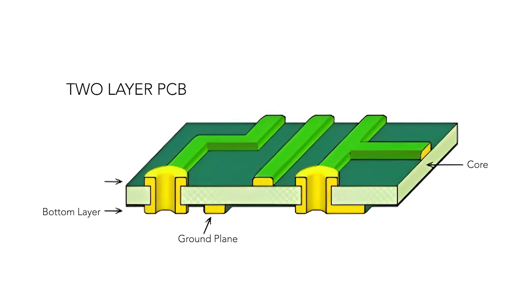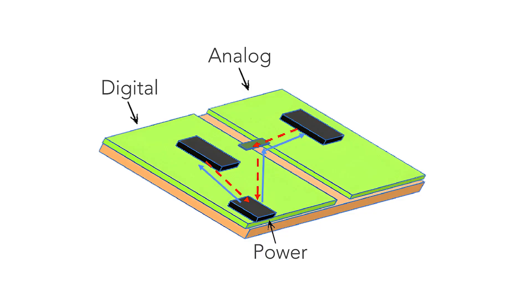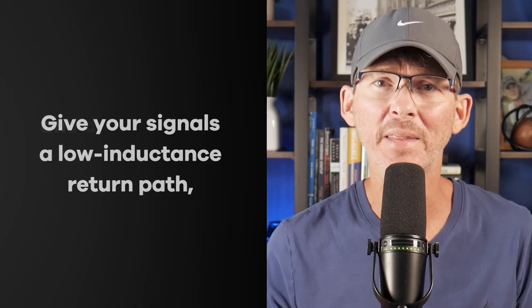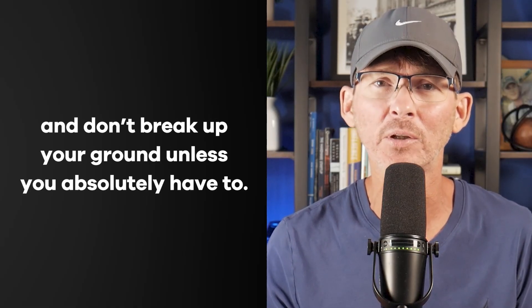Even if you're careful, it's almost impossible to maintain a clean return path on a two-layer board. Trying to split analog and digital grounds on a two-layer board often backfires — signals end up taking long, noisy paths to return, making emissions worse, not better. And once your layout is built this way, there's no quick fix. You can't solder your way out of a bad ground strategy. Most of the time it's going to take a full redesign. A four-layer board with ground and power planes is often worth the extra cost if you care about certification. Give your signals a low-inductance return path and don't break up your ground unless you absolutely have to.